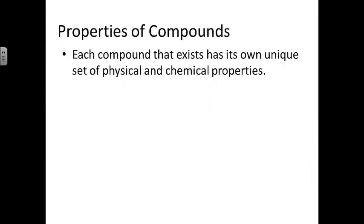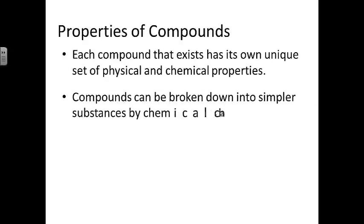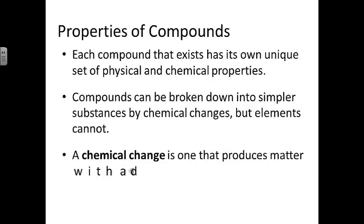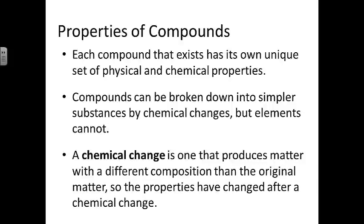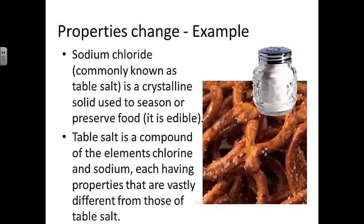Each compound that exists has its own unique set of physical and chemical properties. Compounds can be broken down into simpler substances by chemical changes. Elements cannot. A chemical change is one that produces matter with a different composition than the original matter, so the properties have changed. Sodium chloride, commonly known as table salt, is a crystalline solid used to season or preserve food. It is an edible substance. Table salt is a compound of the elements chlorine and sodium, each of which have properties vastly different from those of table salt.